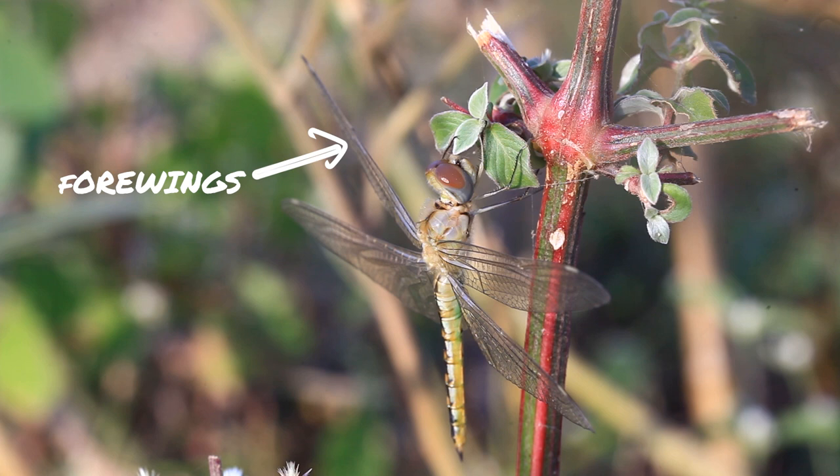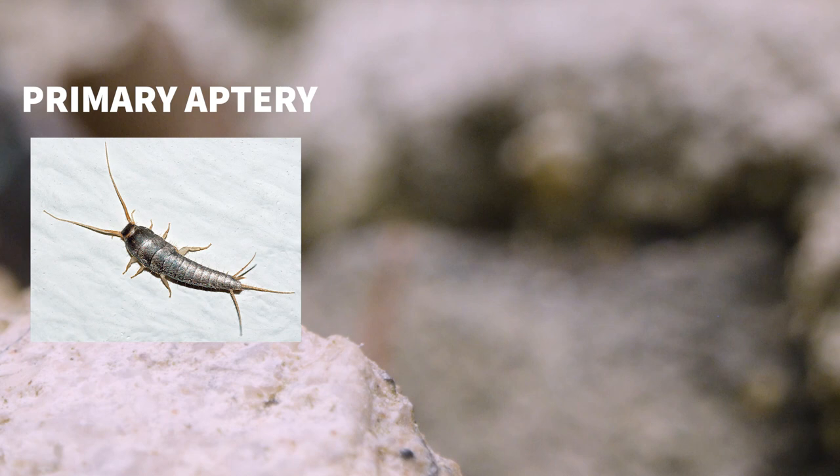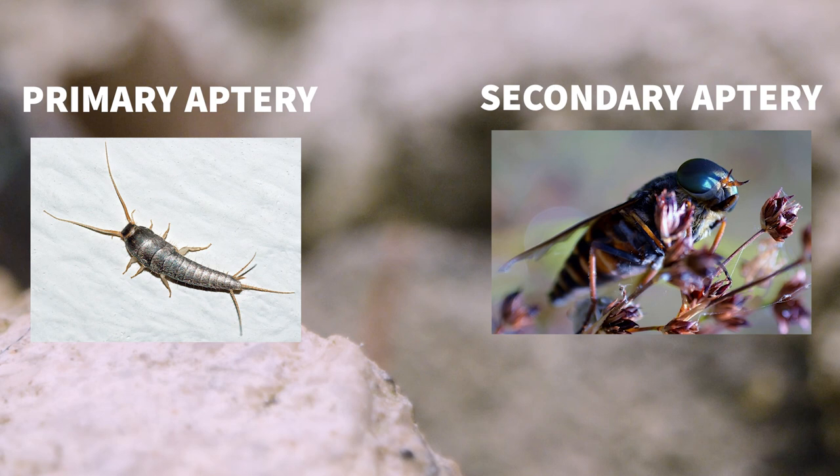The first pair of wings are called the forewings and are located on the mesothorax, and the second pair are called the hindwings and are located on the metathorax. Wingless insects can be divided into two categories: those with primary aptery and those with secondary aptery. Primary aptery means an insect does not have a winged ancestor, and secondary aptery means an insect has a winged ancestor but has since lost those wings.